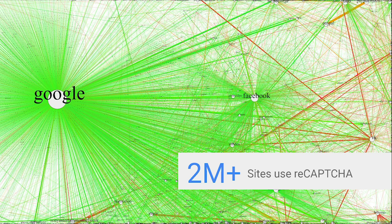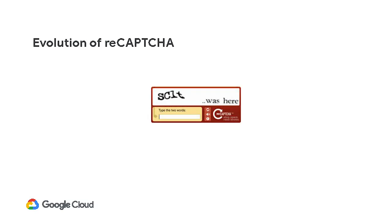Speaking of evolving, I wanted to walk you through a quick history of reCAPTCHA. It really got started with the squiggly bit of text that you're trying to read and type in. And as bots got better, our defenses had to evolve.